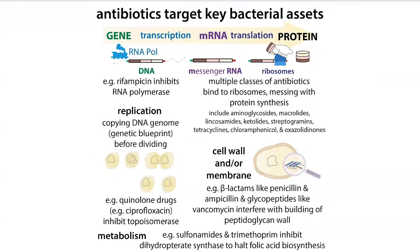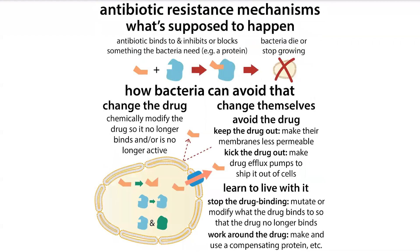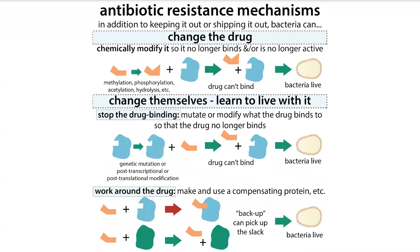Basically, antibiotics are going to target key bacterial assets. For example, one common antibiotic mixture used in mammalian cell culture is PenStrep — penicillin, which targets the cell wall, and streptomycin, which targets translation, so the making of proteins. Bacteria can acquire resistance by altering the drug, pumping the drug out, or actually changing themselves so the drug doesn't bind to them.